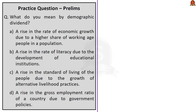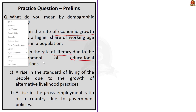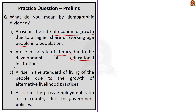The next question asks: What is demographic dividend? Option A: a rise in the rate of economic growth due to a higher share of working age people in the population. Option B: a rise in literacy rate. Option C: a rise in standard of living due to alternative livelihood practices. Option D: a rise in gross employment ratio due to government policies. Since demographic dividend is always linked to working age population, the correct answer is Option A.